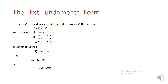The tangent vector of alpha: since x is a multivariable function and alpha is defined through x, we use the chain rule. So alpha'(t) = (∂x/∂u)(du/dt) + (∂x/∂v)(dv/dt), which gives x_u (du/dt) + x_v (dv/dt). The length of the arc of the curve — from the first semester — is s = integral from 0 to t of |alpha'|, so ds² equals the inner product of alpha' with itself.